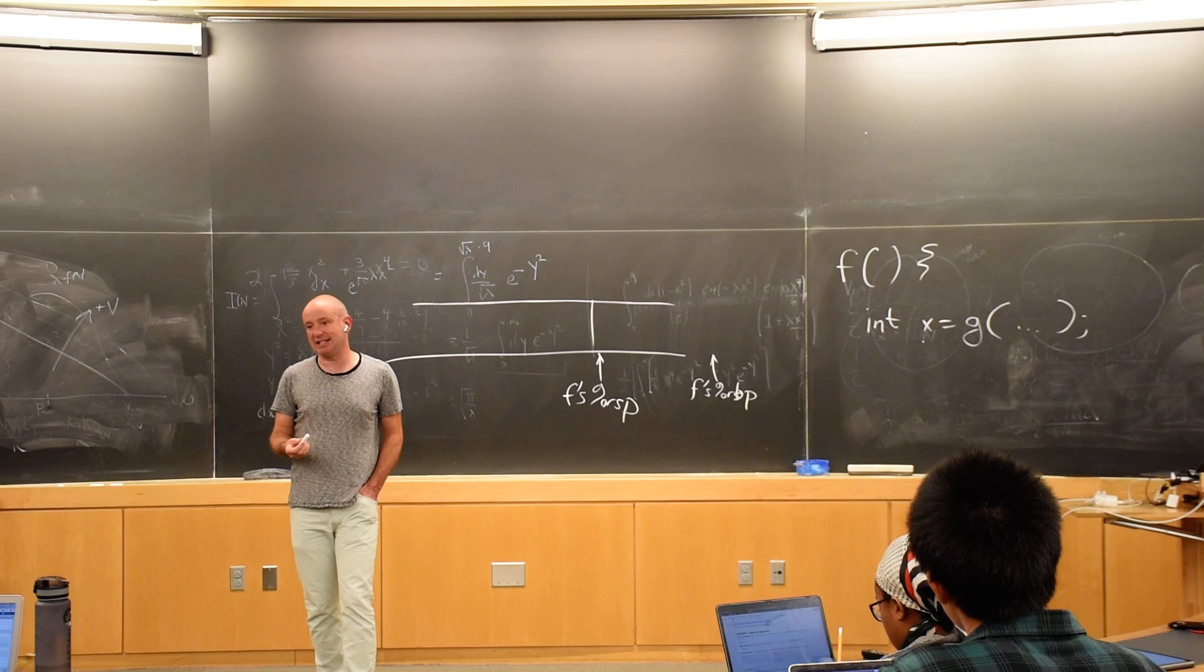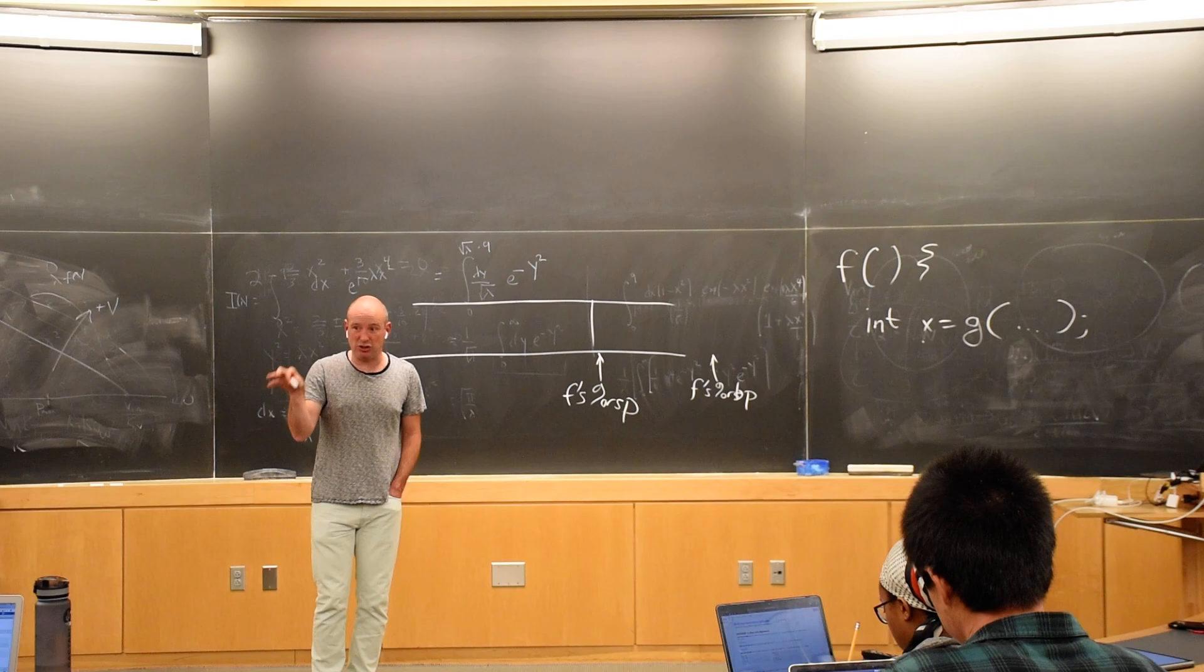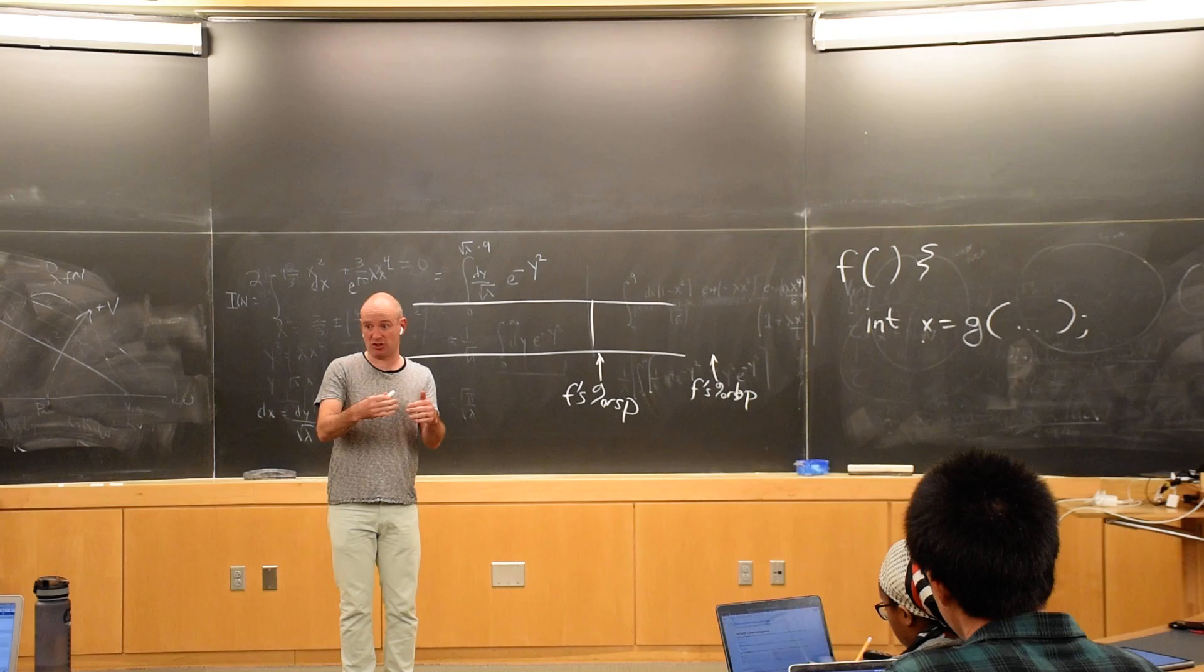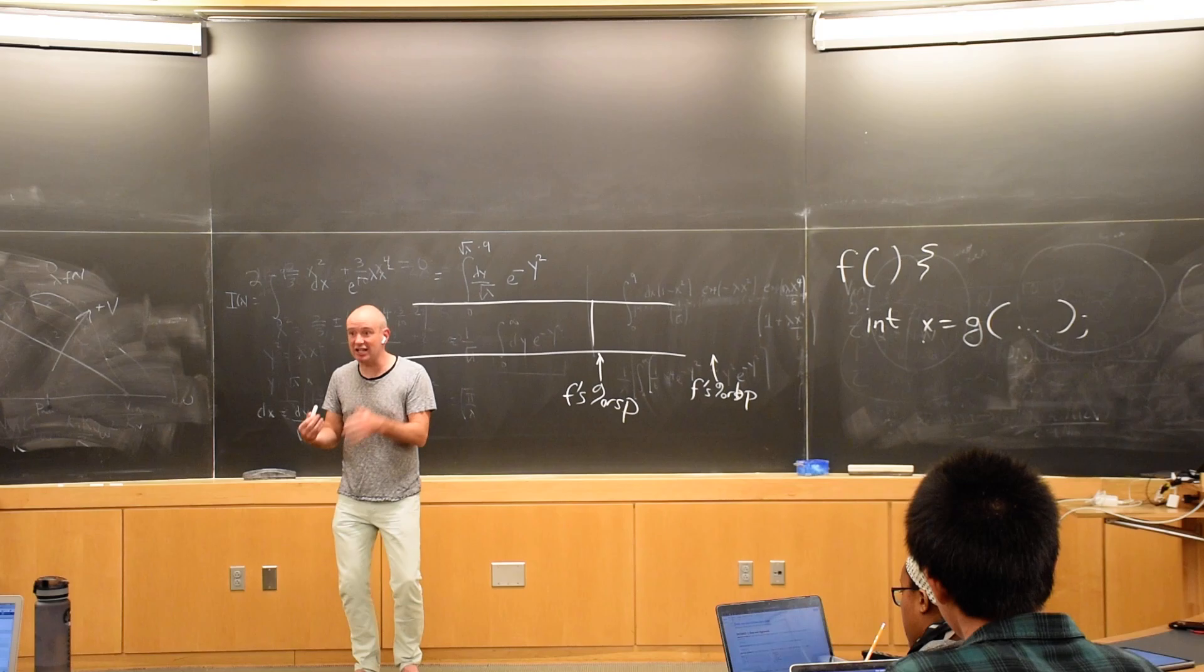And when the base pointer is not being used as an extra general purpose register, and normally in the assembly that you look at, the base pointer is only used as a general purpose register in a leaf function, a function that doesn't make any function call of its own.